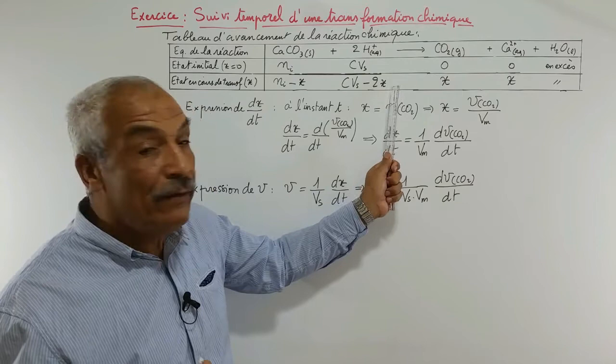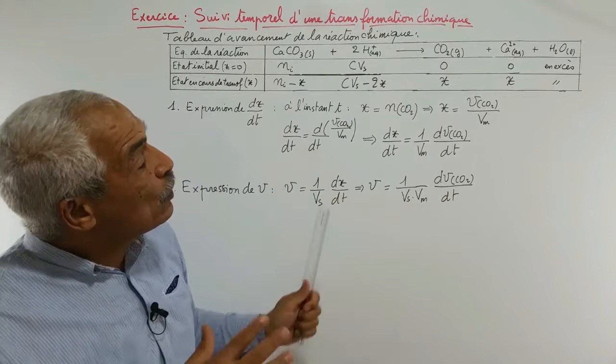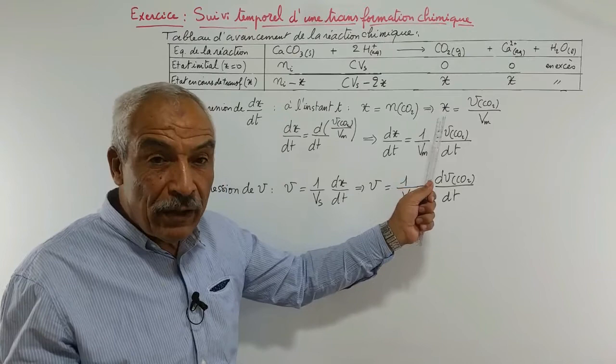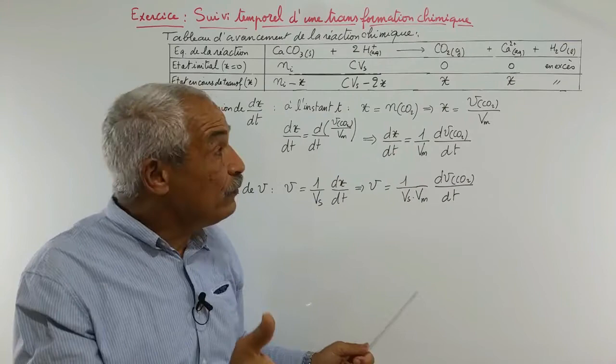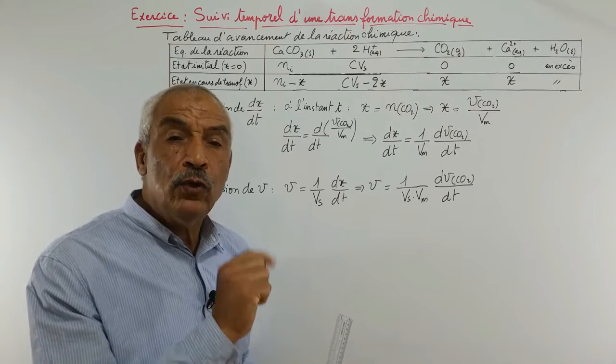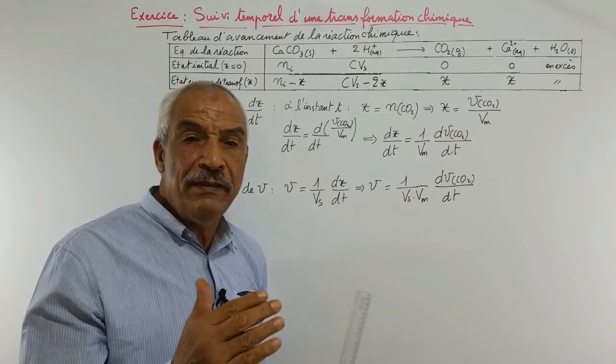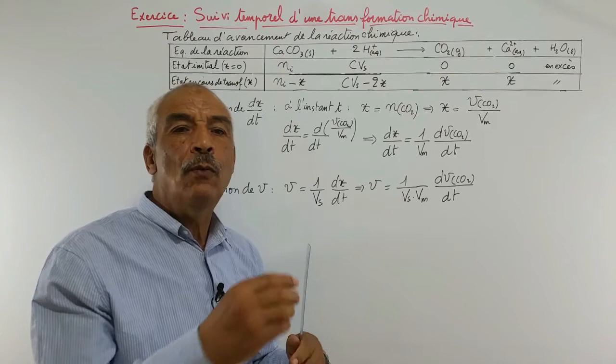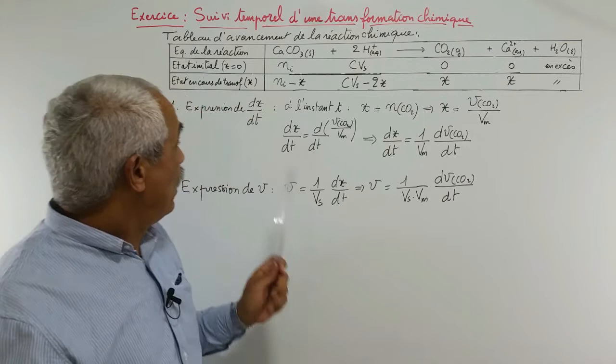Donc H+ est le réactif limitant. Ce tableau d'avancement va nous permettre de lier x avec les quantités de matière d'un réactif ou d'un produit. Par conséquent, on peut lier x avec le volume si c'est un gaz, avec la concentration si c'est une espèce dissoute, ou même avec la conductivité s'il s'agit d'une étude conductimétrique — c'est-à-dire une étude où on mesure la conductivité de la solution à des instants différents.